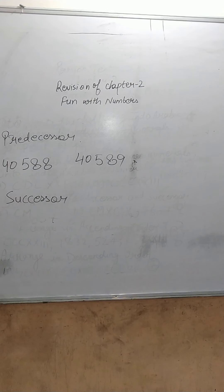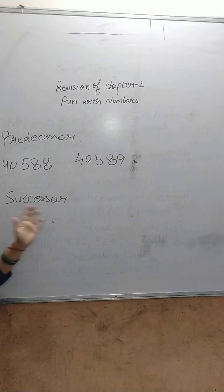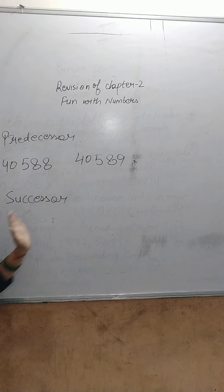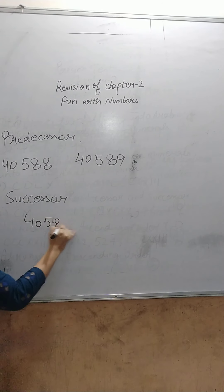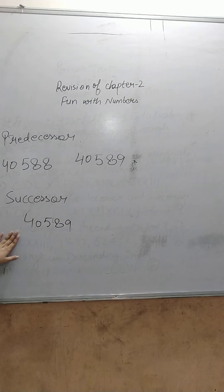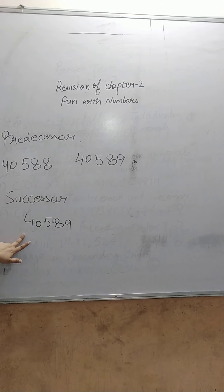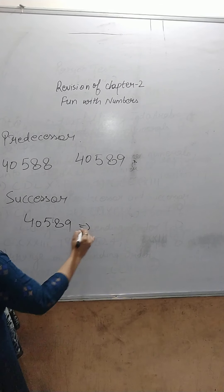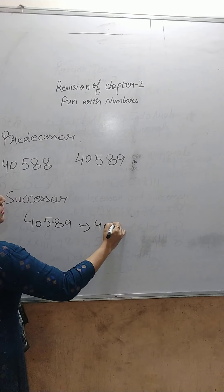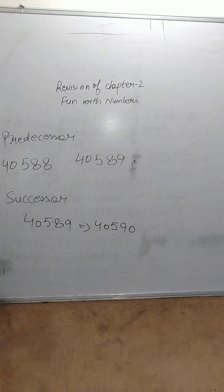And what is successor? Successor means what comes after the number. We have to tell the successor of 40,589 — what number comes just after it. That is called the successor. So what comes after 40,589 is 40,590.